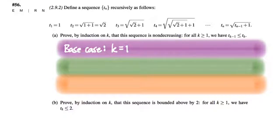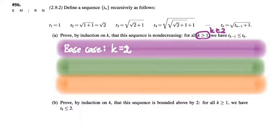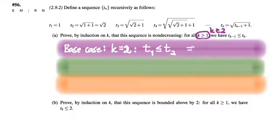Changing to k ≥ 2 has the same meaning and fixes the issue, so that becomes our new base case. For k = 2, we need to show that t_1 ≤ t_2. Since t_1 = 1 and t_2 = √2, and we can all agree that √2 > 1, we're good on the base case.